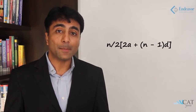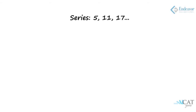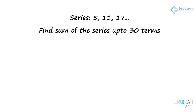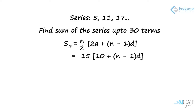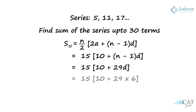Taking the series 5, 11, 17, and so on, if we have to find the sum of the first 30 terms, we use the formula (n/2) × [2a + (n−1) × D]. Here n/2 = 15, 2a = 10, and D = 11 − 5 = 6, so (n−1) × D = 29 × 6 = 174. Thus we get 15 × (10 + 174) = 15 × 184 = 2760. The sum of the first 30 terms is 2760.